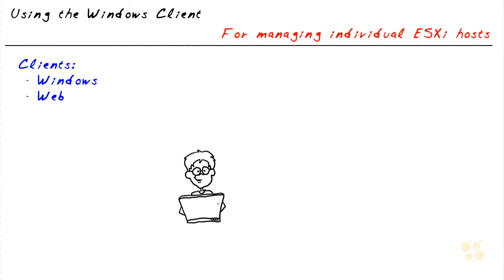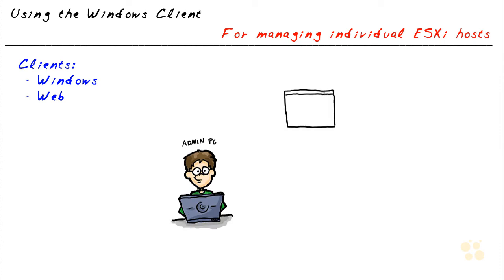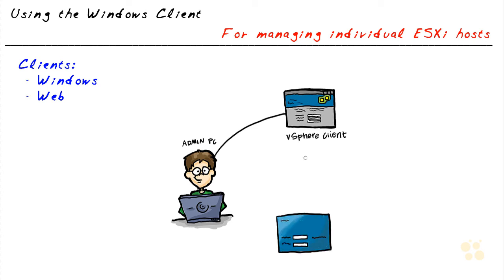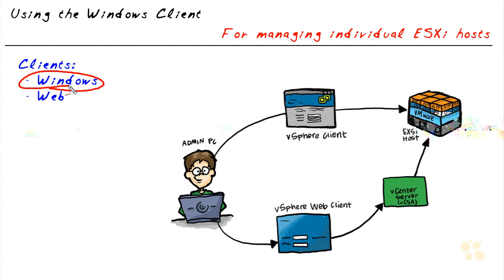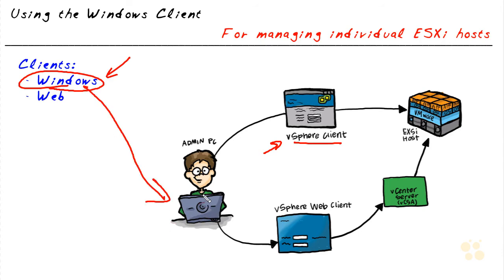Once we have at least one ESXi host installed with an IP address we can use to manage that device, our very next step might be to use some type of graphical user interface. To manage our ESXi host with a GUI, we have two current basic options. One is called the Windows client — also referred to as the vSphere client in documentation — which is an application we run on our administration PC to connect to and manage an ESXi host.